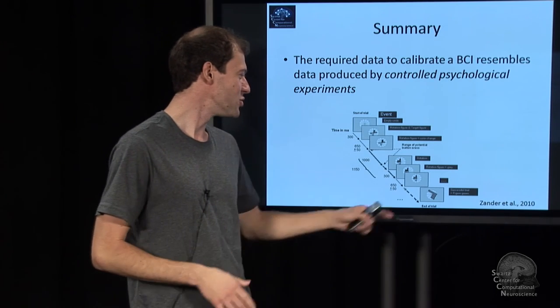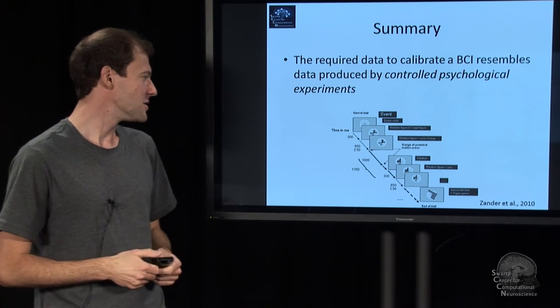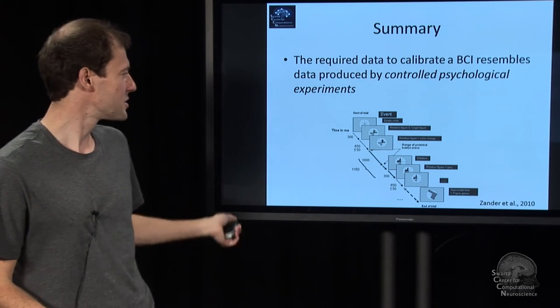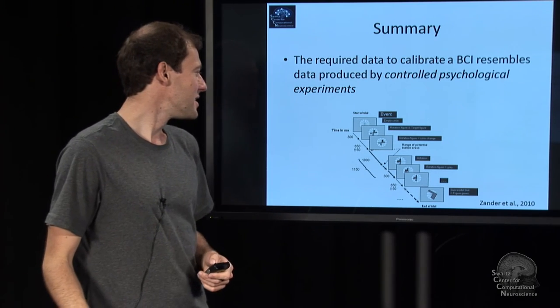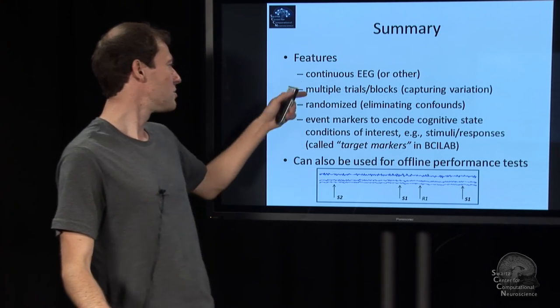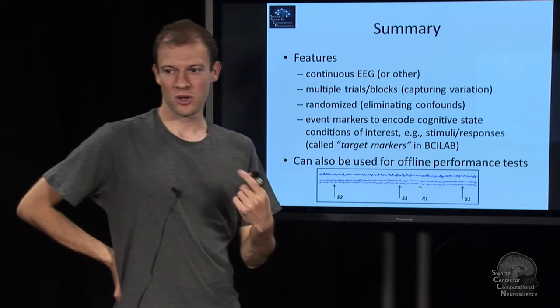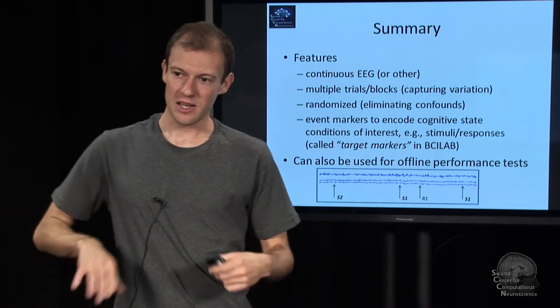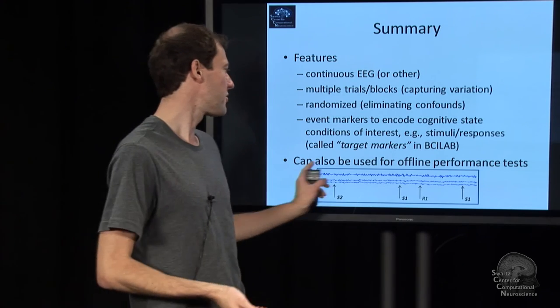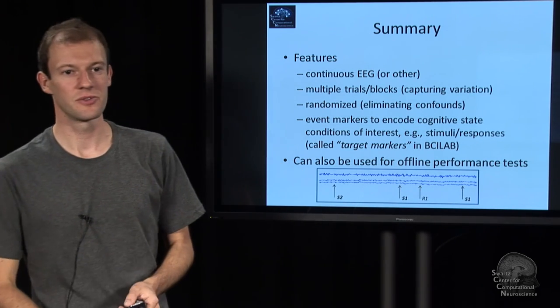If you design an experimental manipulation to get the subject into these states, what you end up with is what looks pretty much like a standard psychological type experiment. You have multiple realizations. You show certain kinds of stimuli, such as pictures, exciting, non-exciting, and so on. You record the EEG and you record the labels in form of certain markers. That's a well-known discipline with all the various trade-offs. At the end of the day, you have continuous EEG, multiple trials, it's randomized usually to deal with confounds, and you have event markers that indicate events. That is what BCI lab requires as input data and most BCI toolboxes and implementations. You can use the same data to also test offline performance.